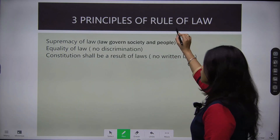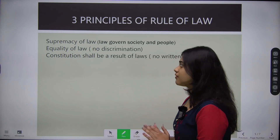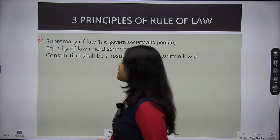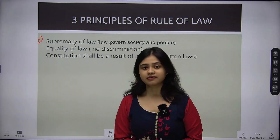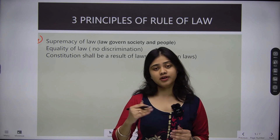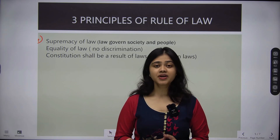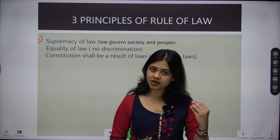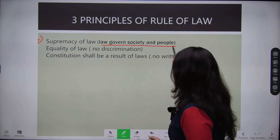Rule of Law has three principles given by Dicey. The first principle is supremacy of law. As the term itself suggests, the law is supreme — law governs the society and the people. It is not that the government is supreme; whatever the law is, that is what we consider supreme. Law governs the society and the people.